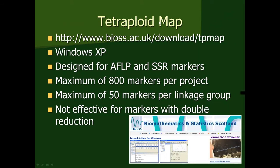Now we're getting ready for using the Tetraploid Map software, and we have the link here from where you can download this. It needs to use Windows XP software at this time, and it was originally designed to be used with AFLPs and SSR markers. The maximum right now is 800 markers, but Christine Hackett is expanding this so that it can handle a larger number, and on a per chromosome basis or linkage group, you can only use a maximum of 50.